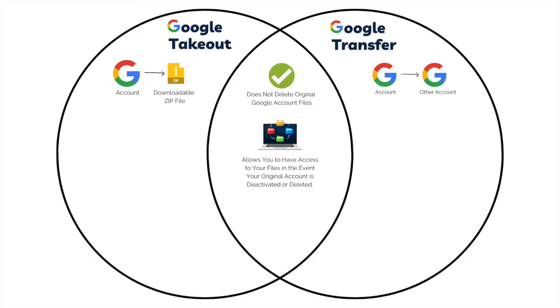One important note: once you've downloaded that zip file or triggered the transfer to the second account, if you make any changes to that original Google account, they're not going to be reflected in that downloadable zip file, and they're also not going to continue to transfer to that second Google account. So if you make changes after doing the transfer or takeout, you need to also make those changes in the second account, or do another takeout to get the updates. The main aim of both services is to allow you to have access to your files in the event that your account is deactivated or deleted — that's the purpose of both of them, just done differently.